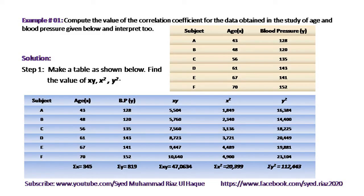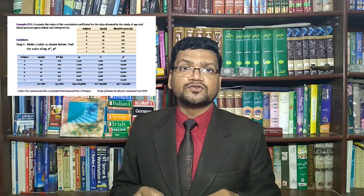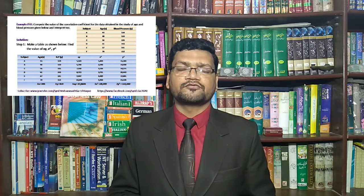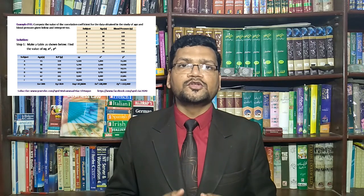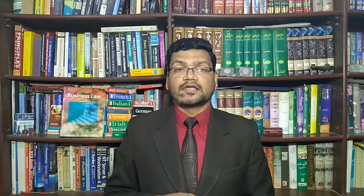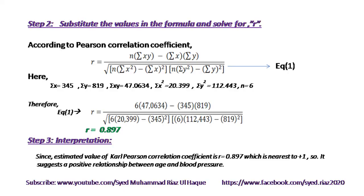They are finding the relationship between age and blood pressure — if a person's age increases, is there an effect on blood pressure? Step one: make a table and find the values of x, y, xy, x², and y². Write down columns for subject, age, blood pressure, and the computed columns. The formula of the correlation coefficient guides what columns are needed so that after computing these values you can substitute them into the formula.